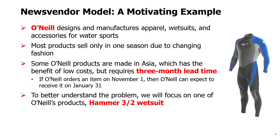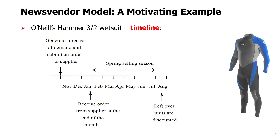Basically, if O'Neill orders an item on November 1st, they can expect to receive it at the end of January. To better understand the problem, we will focus on one of O'Neill's products called the Hammer 3-2 wetsuit. We see a timeline in this picture. First, a forecast of demand must be generated by the beginning of November, when O'Neill has to submit an order to the supplier located far away.